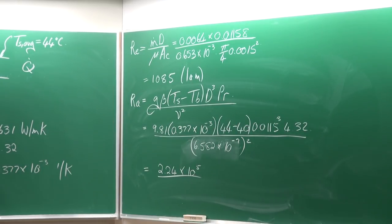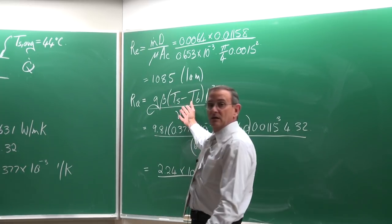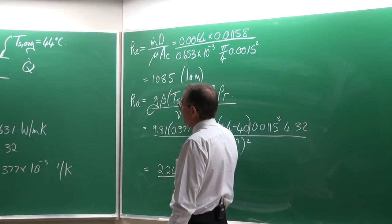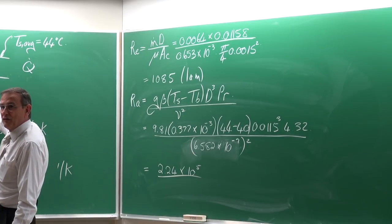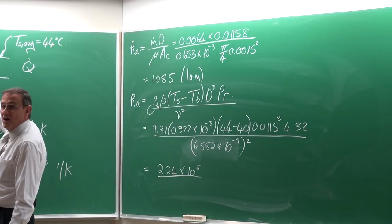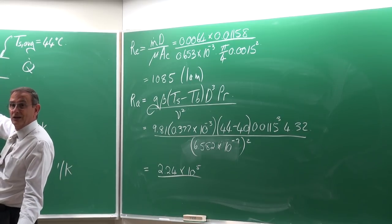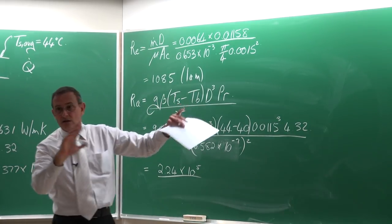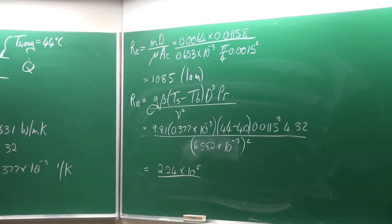Regarding whether the order of bulk temperature and surface temperature matters: it can give you a negative or positive Rayleigh number. Normally, because it is heating with a constant heat flux, the wall is always at a higher temperature than the fluid. If it is the other way around, we simply adjust the expression. We do not use negative Rayleigh, Prandtl, or Reynolds numbers — we always take the highest minus the lowest.